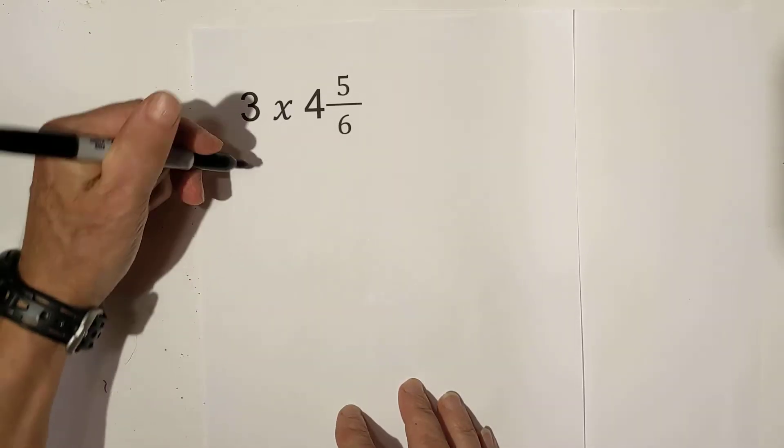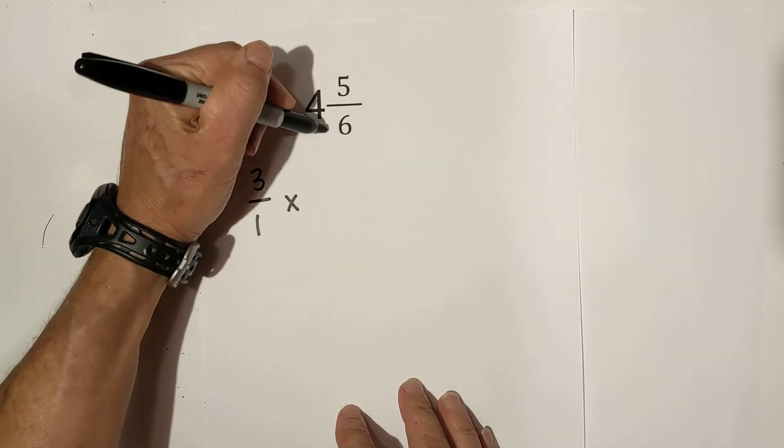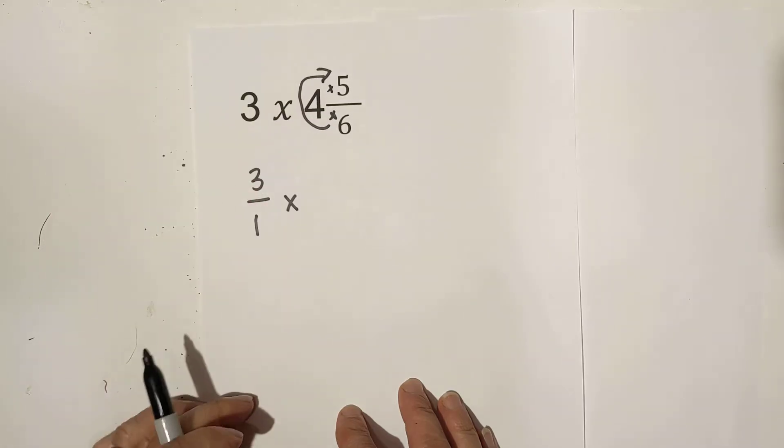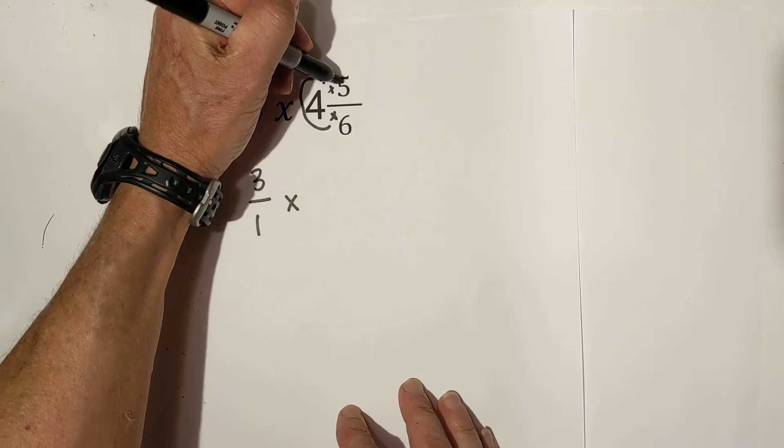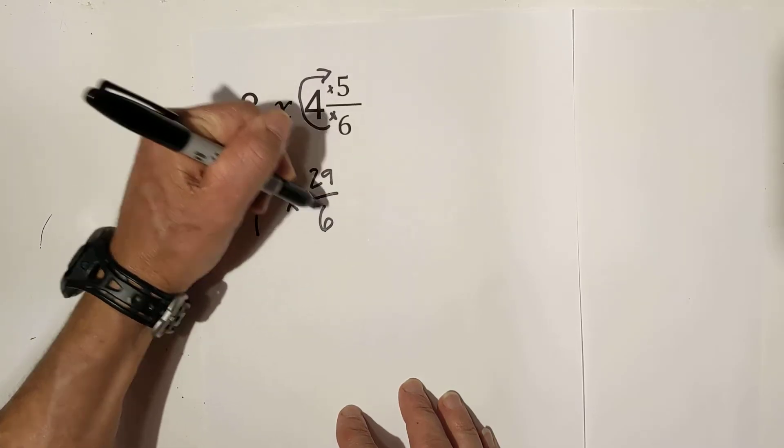First we're going to convert them all to improper fractions. So we have 3 over 1 times, let's go around the whole number. Multiply then add. 6 times 4 is 24. Then plus 5 is 29 over 6.